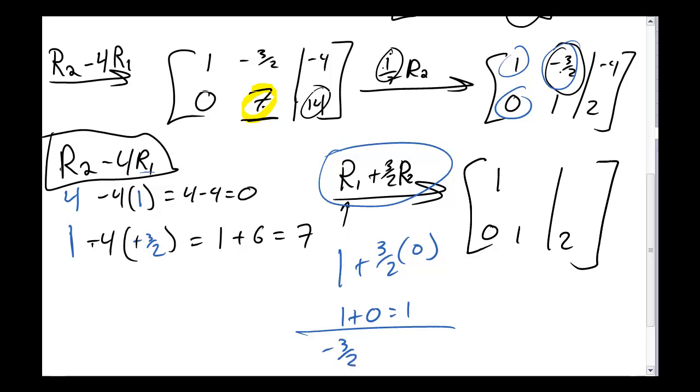But then for row 1, I take negative 3 halves plus 3 halves from here times my row 2 number, and my row 2 number there is 1. This gives me negative 3 halves plus 3 halves, which equals 0. This is what I wanted to have there. Lastly, I take this negative 4, and I add plus 3 halves times row 2, and that's going to leave me negative 1.